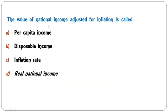Which precautions should be taken while calculating national income by the value added method? Intermediate goods are not to be included; sale and purchase of second-hand goods not to be included; commission or brokerage on sale or purchase of old goods will be included; all of the above. The correct answer is all of the above.